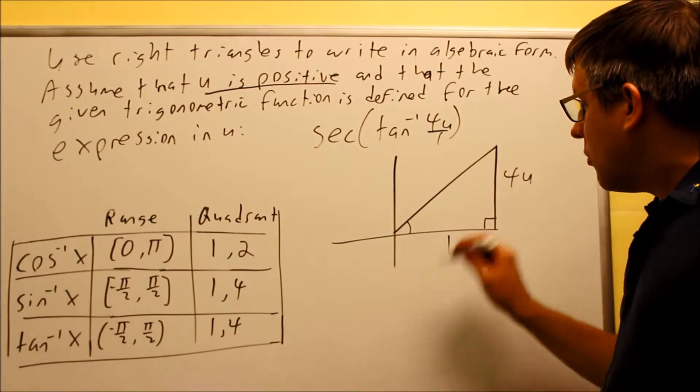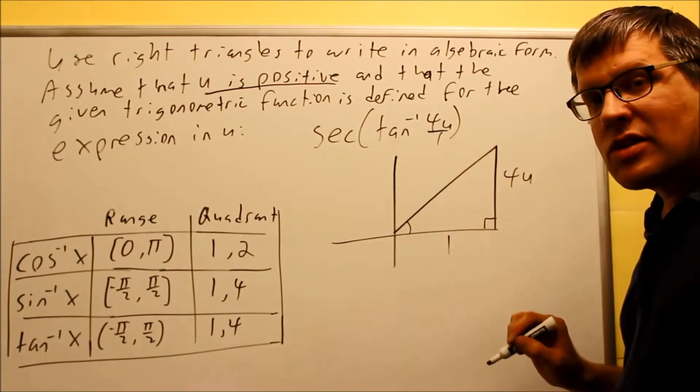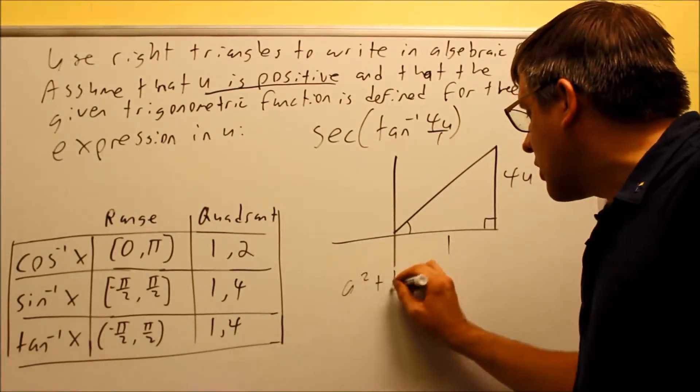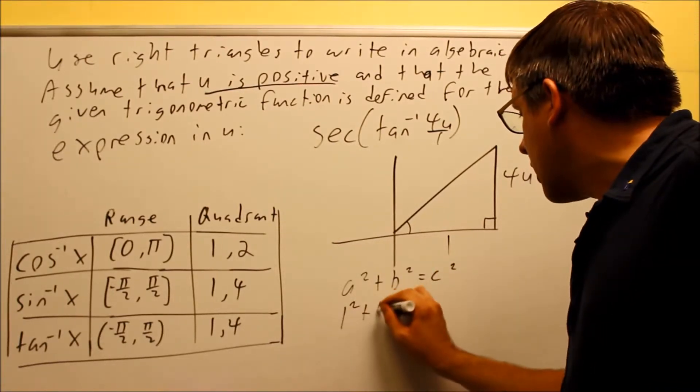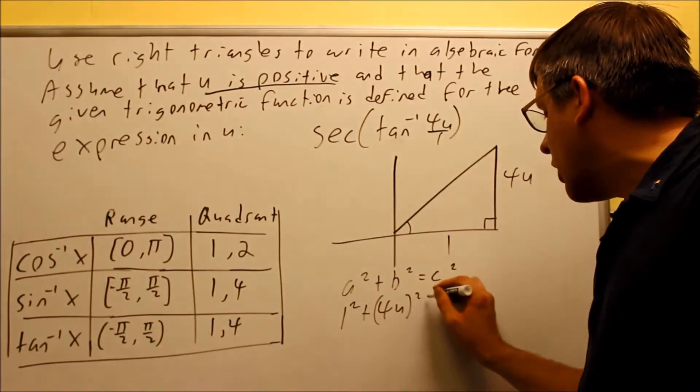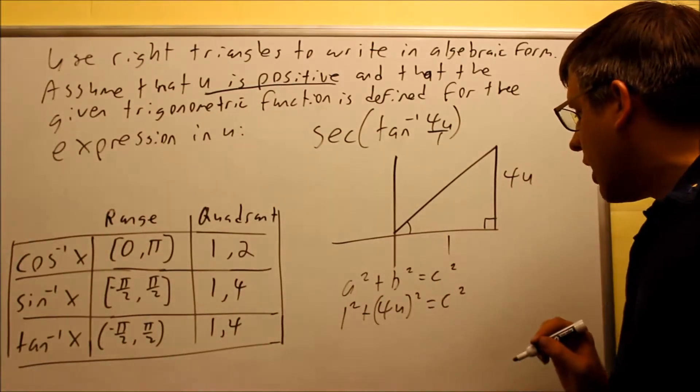We need to use Pythagorean theorem to figure out what the last side is. And so we do A squared plus B squared equals C squared. And we have 1 squared plus 4U quantity squared. That's going to equal C squared.